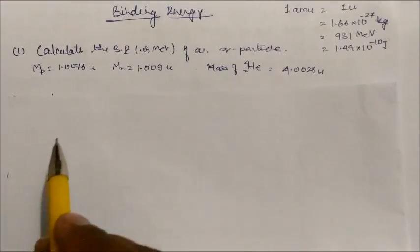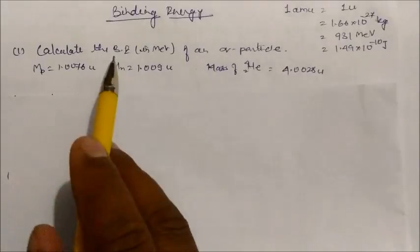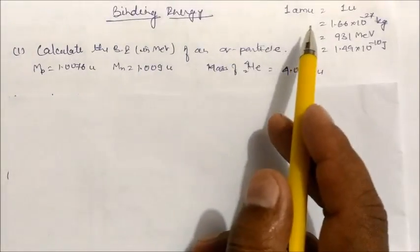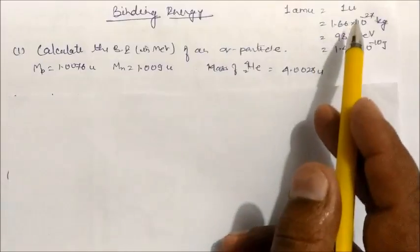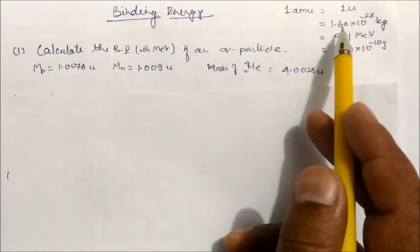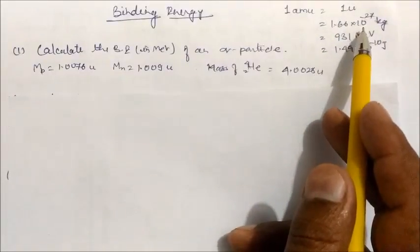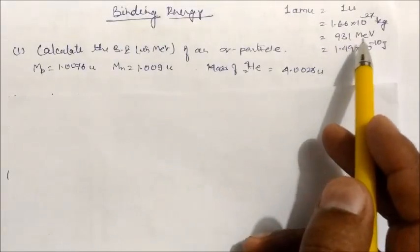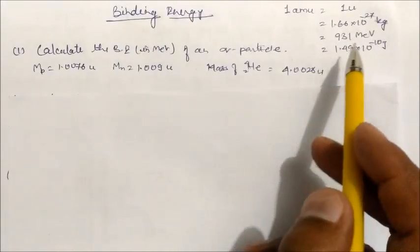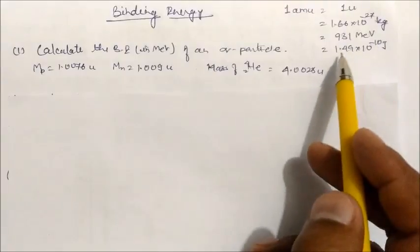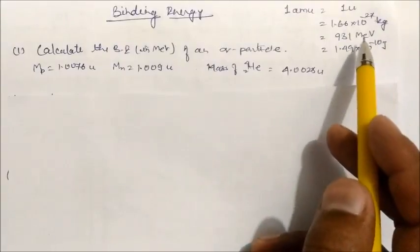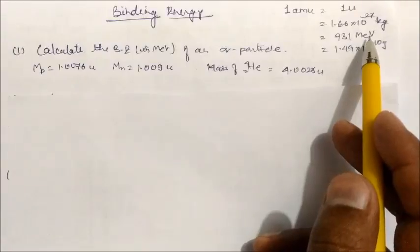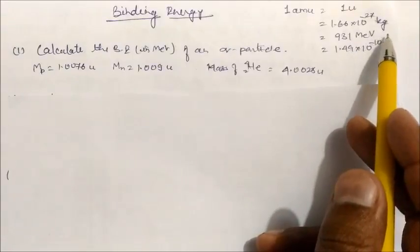Today we will solve some questions based on the binding energy of the nucleus. We know 1 amu is equal to 1u. The value of 1u in terms of kilograms is 1.66 × 10⁻²⁷ kg, or in terms of energy it is 931 MeV. If you want to convert to joules, it is 1.49 × 10⁻¹⁰ J. The mega prefix is 10⁶ and 1 electron volt is 1.6 × 10⁻¹⁹ J.